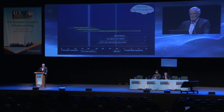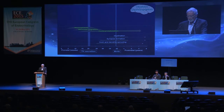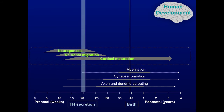This slide overlaps what John Lazarus said before. This is a scheme of human brain development in relation with thyroid hormone secretion and birth, to show what the main events in brain development occur after thyroid hormone secretion from the fetus is already established. So before, during early development, the process of neurogenesis is probably not under strict thyroid hormone control.